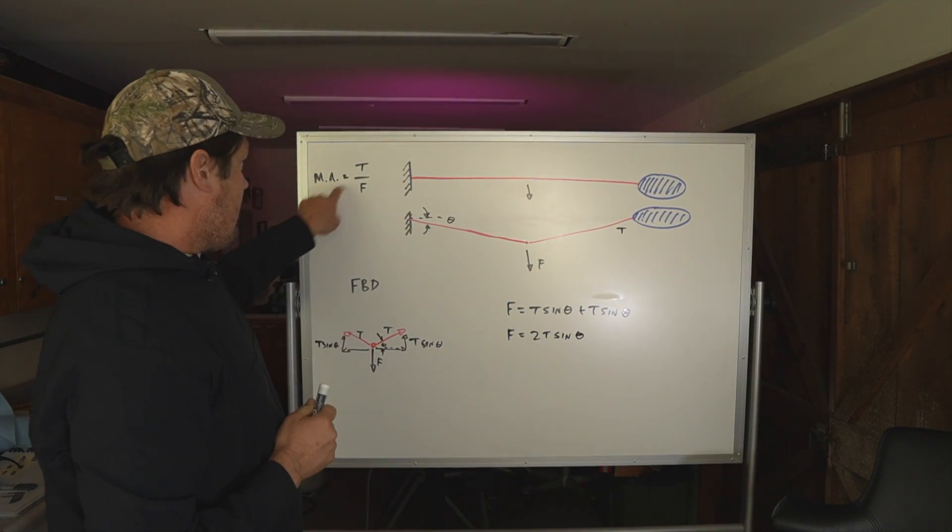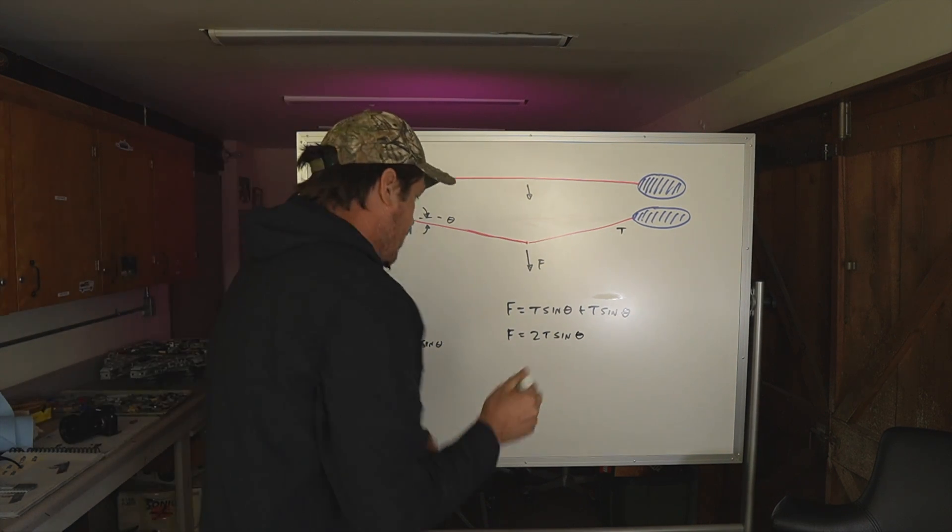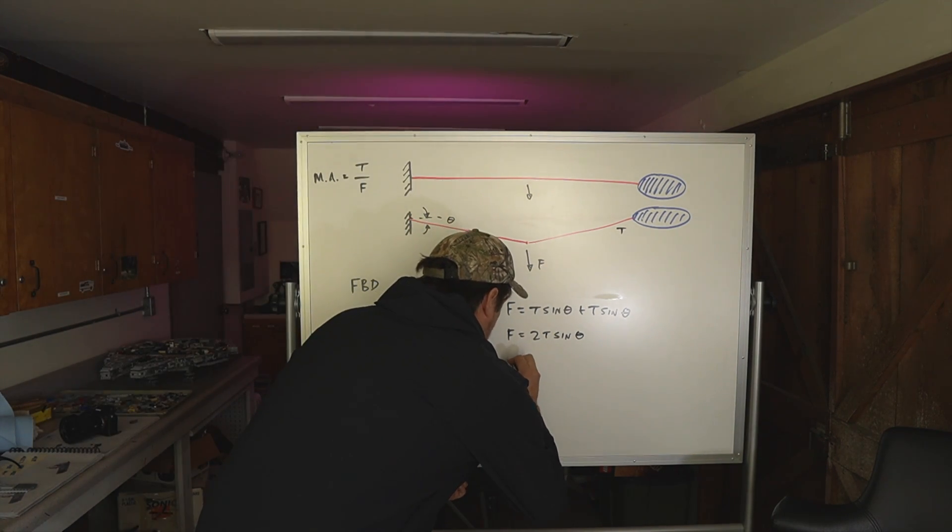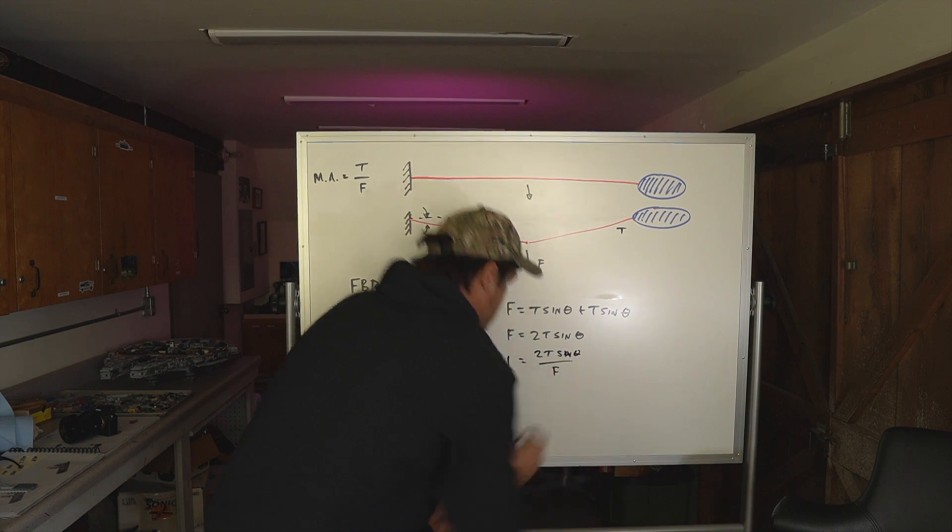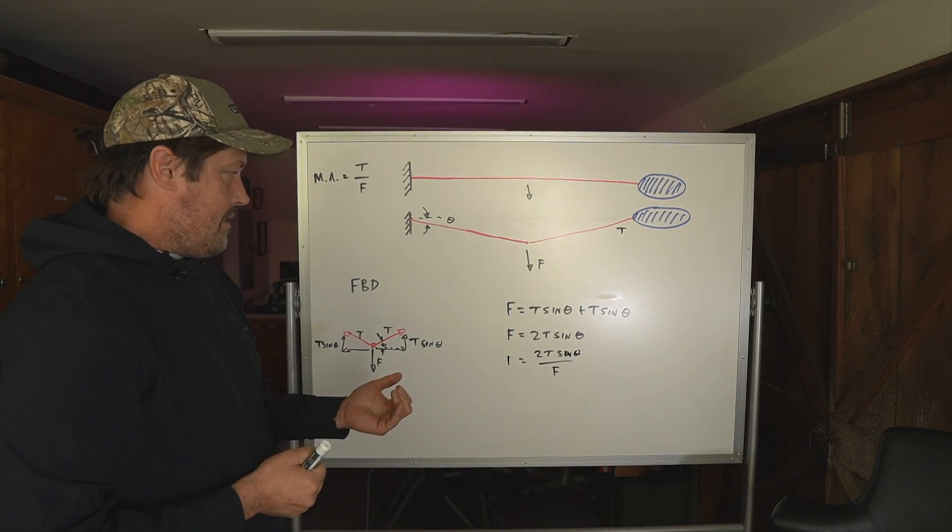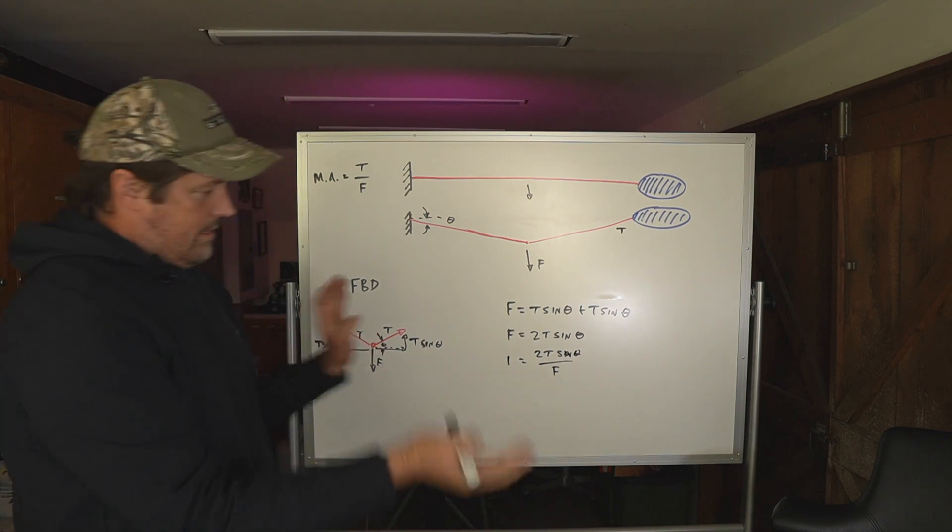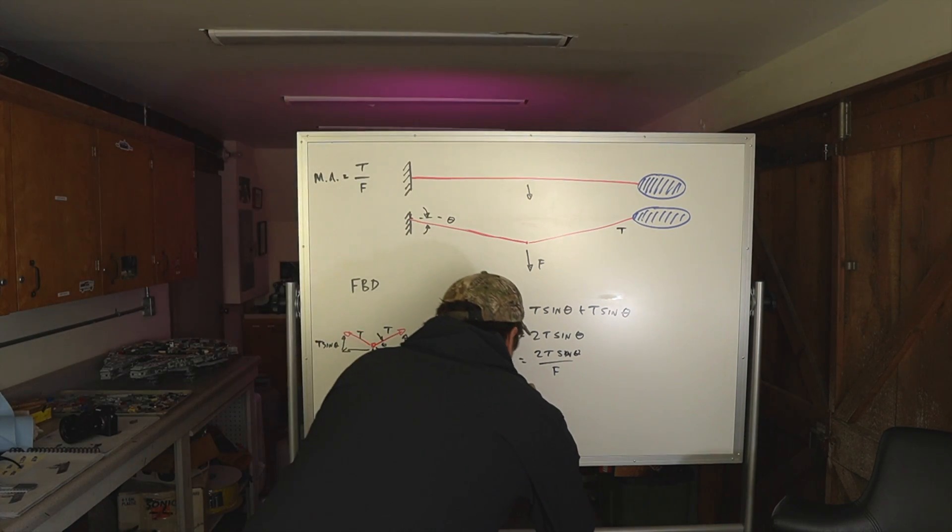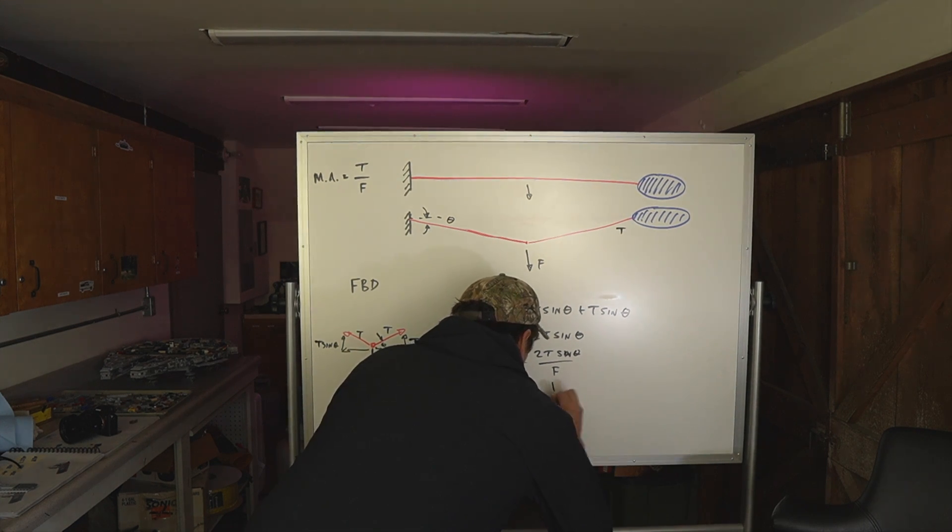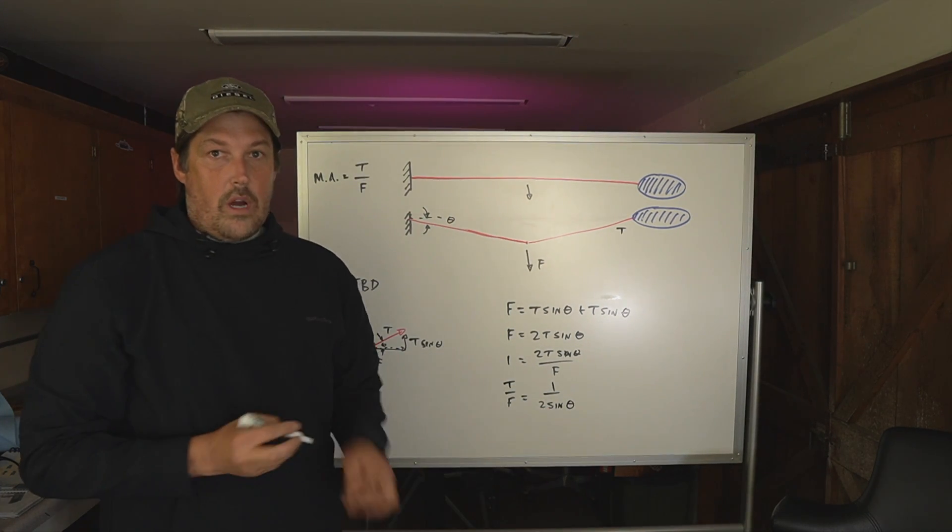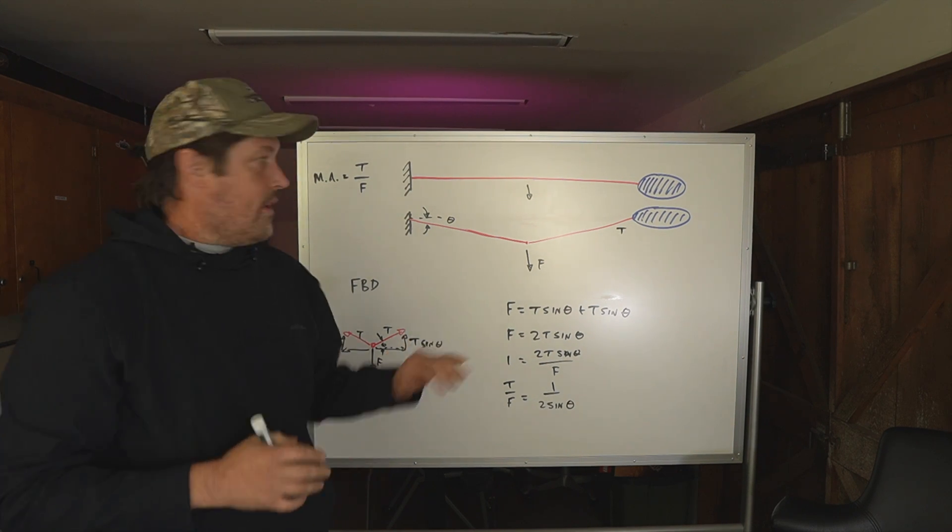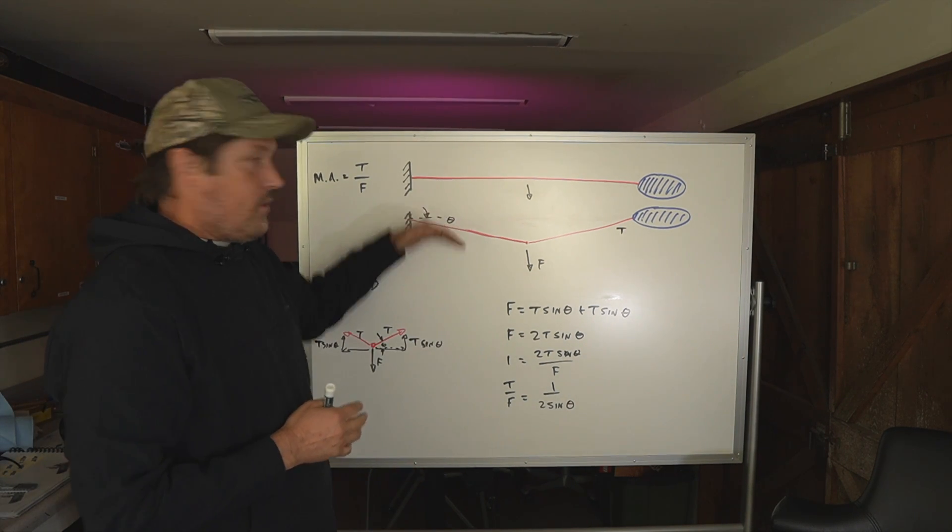And our goal is to get mechanical advantage, which is T over F. So I'm going to divide both sides by F. So I get 1 equals 2T sine theta over F. And I'm going to divide both sides by 2 sine theta and switch things around. I'm going to do a couple of math steps in a row here. But I basically get T over F equals 1 over 2 sine theta, or I could say mechanical advantage equals 1 over 2 sine theta.